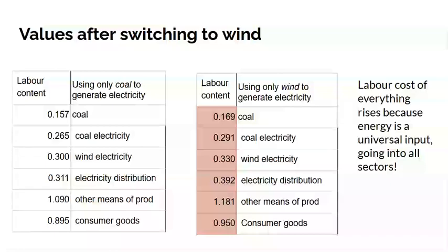If we switch entirely to producing electricity using wind — that's to say, we introduce environmental constraints that you're not allowed to burn coal and have to produce all electricity using wind — you can recompute the value of everything. The value of everything goes up. Why is that? It's because energy is a universal input. Everything requires energy to produce. So if more labour is required to produce energy, then everything rises in value, or looked at the other way, the cost to society in terms of labour time of producing things goes up.